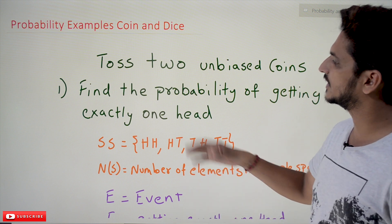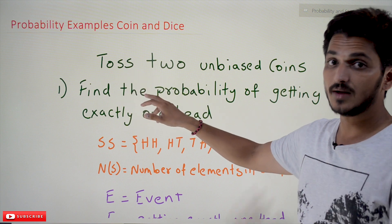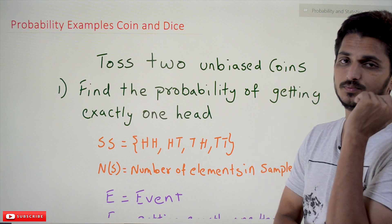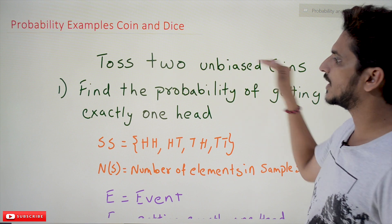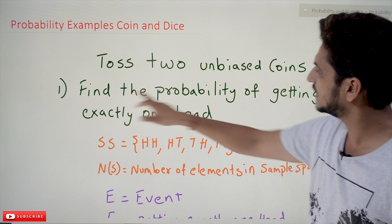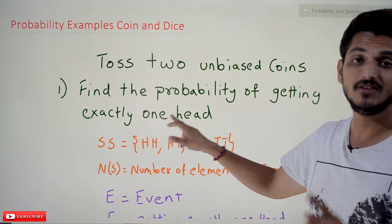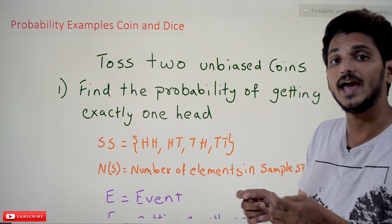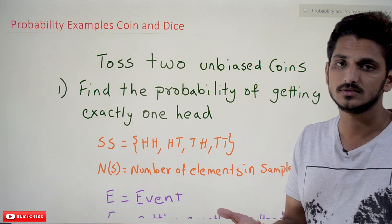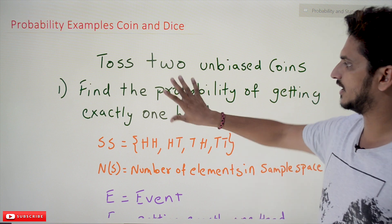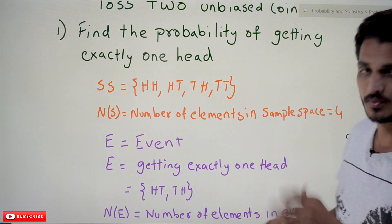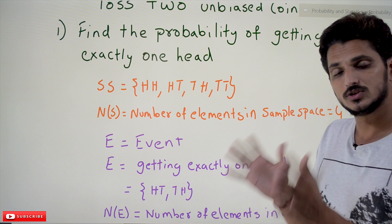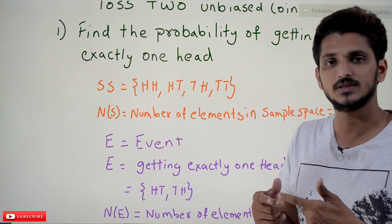We'll go a little bit slow in understanding how to find the probability values for the given events. Let's take this experiment: we are doing a random experiment — toss two unbiased coins. We discussed what unbiased coins means. When we toss two unbiased coins, the question is: find the probability of getting exactly one head. First, we need to identify the sample space — the list of all the possibilities in the random experiment.